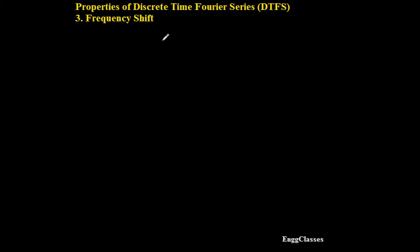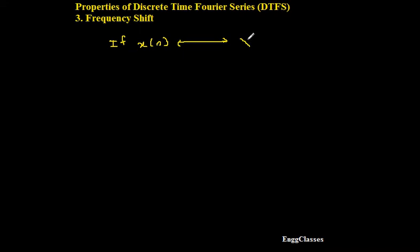We shall first make the statement of the frequency shift property, then we shall consider the proof for the same. The statement goes something like this: if the given discrete time signal x of n leads to X of k by taking the DTFS, wherein x of n is the discrete time signal and X of k is the frequency coefficient of the given signal x of n,